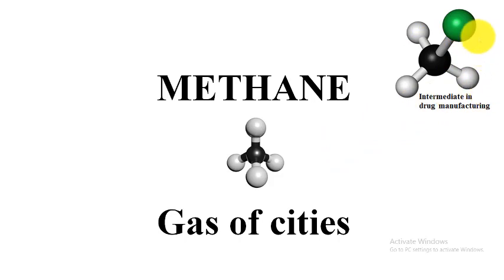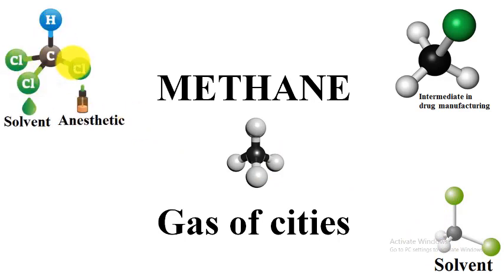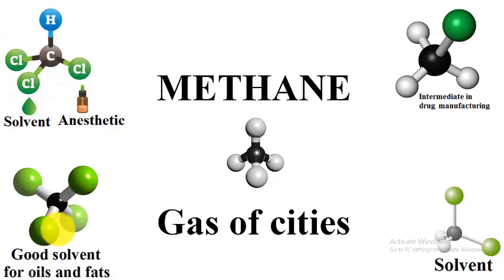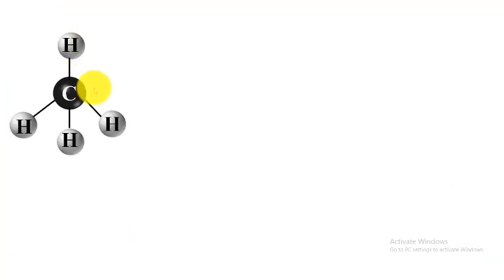This is CH3Cl. It is used in drug manufacturing. This is CH2Cl2. It is used as a solvent. This is CHCl3. It is used as a solvent and as anesthetic, while CCl4 is considered to be a good solvent for oils and fats.